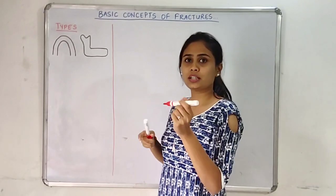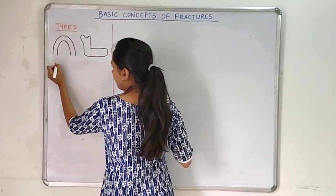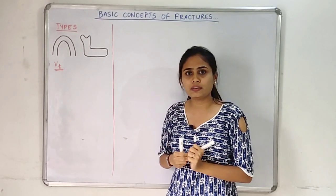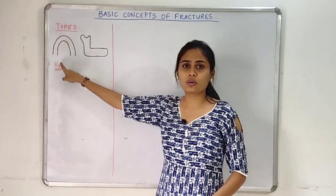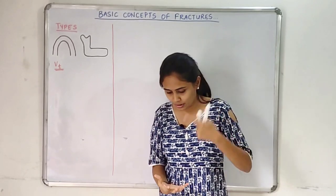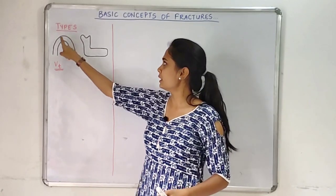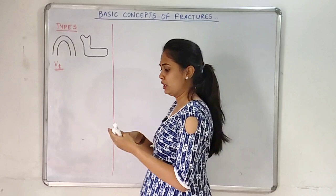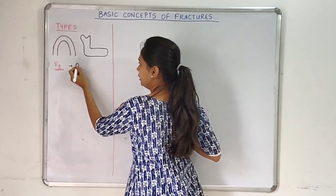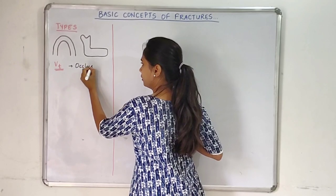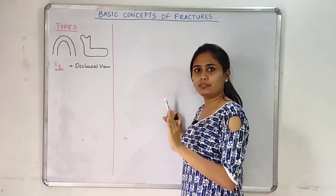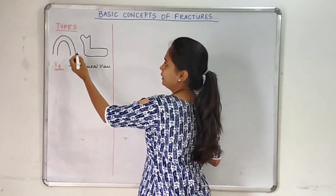First we will discuss about the vertically favorable and unfavorable fractures. For vertically favorable and unfavorable fractures, we need to have an occlusal view, or the top view. So we have a mandible and we are looking from the top. For vertically favorable and unfavorable fractures, we need the occlusal view.